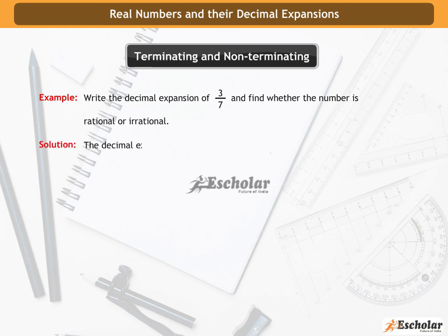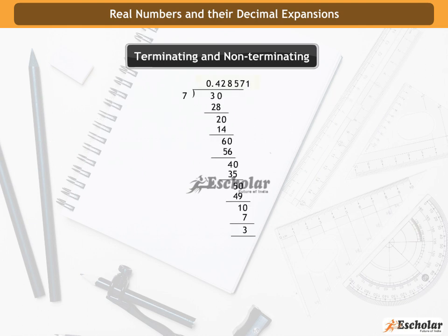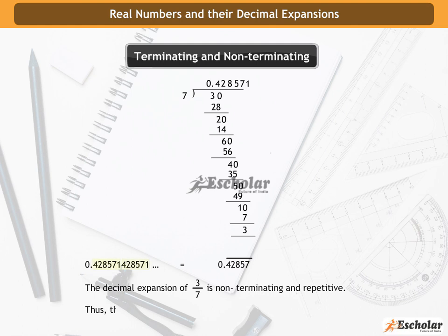Solution: the decimal expansion of 3 by 7 using the long division method as shown is 0.428571428571 and so on, which is equal to 0.428571 bar. Hence, the decimal expansion of 3 by 7 is non-terminating and repetitive. Thus, the number 3 by 7 is rational.